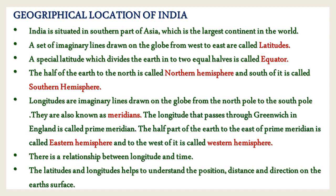The half of the earth to the north is called the Northern Hemisphere and south of it is called the Southern Hemisphere. Longitudes are imaginary lines drawn on the globe from the north pole to the south pole. They are also known as meridians. The longitude that passes through Greenwich in England is called the Prime Meridian. The half part of the earth to the east of the Prime Meridian is called the Eastern Hemisphere and to the west of it is called the Western Hemisphere.